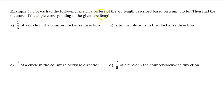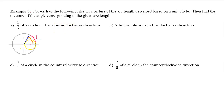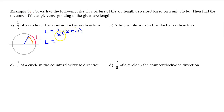Example 3. For each of the following, sketch a picture of the arc length described based on a unit circle, then find the measure of the angle corresponding to the given arc length. Part A: one-sixth of a circle in the counterclockwise direction. Counterclockwise means the radian measure will be positive. The arc length is one-sixth of the circumference, so one-sixth times 2πr, but r equals 1 on the unit circle. So the arc length is one-sixth of 2π, which is 2π/6, reducing to π/3. On the unit circle, arc length equals angle measure, so the angle measure is π/3.